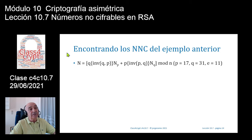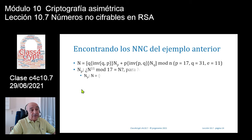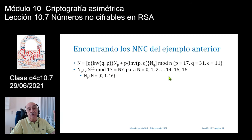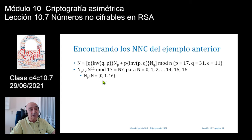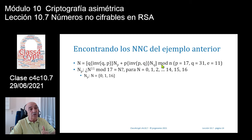Vamos a encontrar esos números no cifrables en el ejemplo anterior. Tenemos P=17, Q=31 y E=11. Hacemos la consulta n elevado a 11 módulo 17 para n = 0, 1, 2, ..., 16: 0 elevado a 11 módulo 17 me da 0, lo apunto; 1 elevado a 11 módulo 17 me da 1, lo apunto; 2 elevado a 11 módulo 17 no da 2, no lo apunto. Así hago con todos hasta llegar a 16: 16 elevado a 11 módulo 17 me da 16, lo apunto.